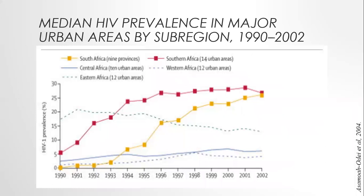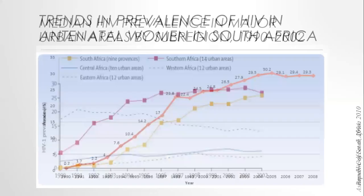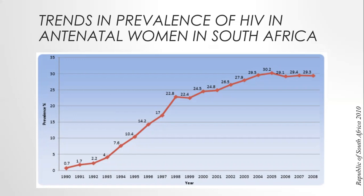Trends in antenatal HIV seroprevalence followed a steady increase from 1990 to 2005, reaching a plateau between 2006 to 2007. Further considerations in exploring these trends are variations in the different provinces, given that these could be pronounced. In 2008, prevalence of HIV in antenatal women aged 15 to 49 in the Western Cape was estimated to be 16.1%, while KwaZulu-Natal prevalence was 38.7%. Here in Figure 2 we can see the increasing trend in prevalence from 1990 and the plateau between 2006 to 2008.